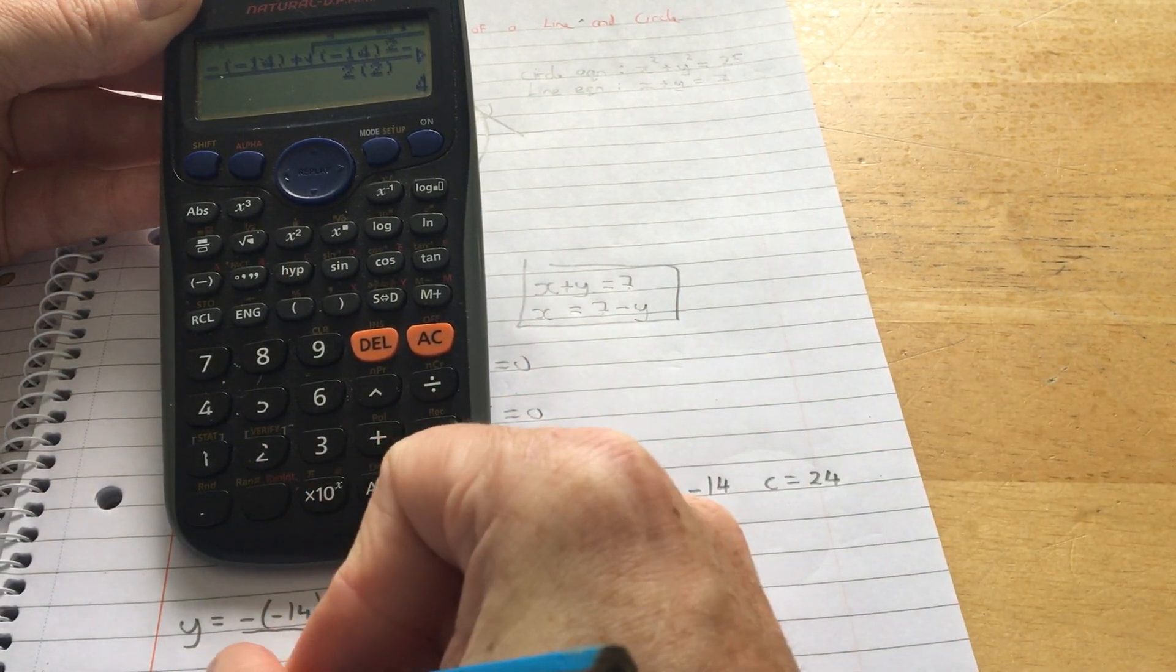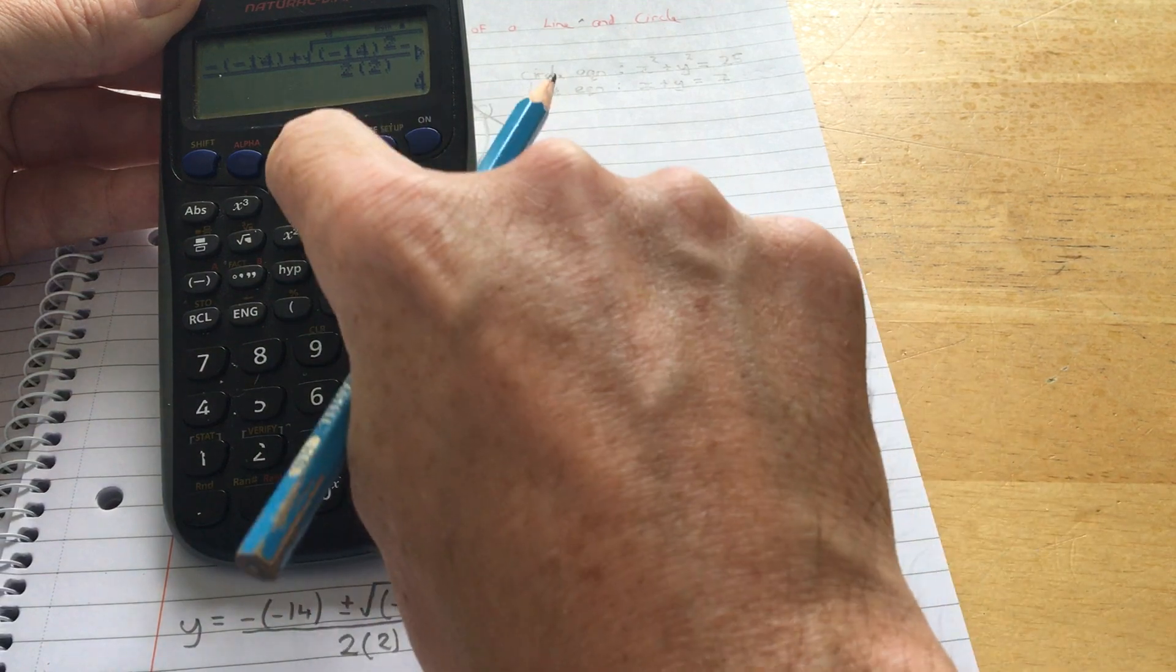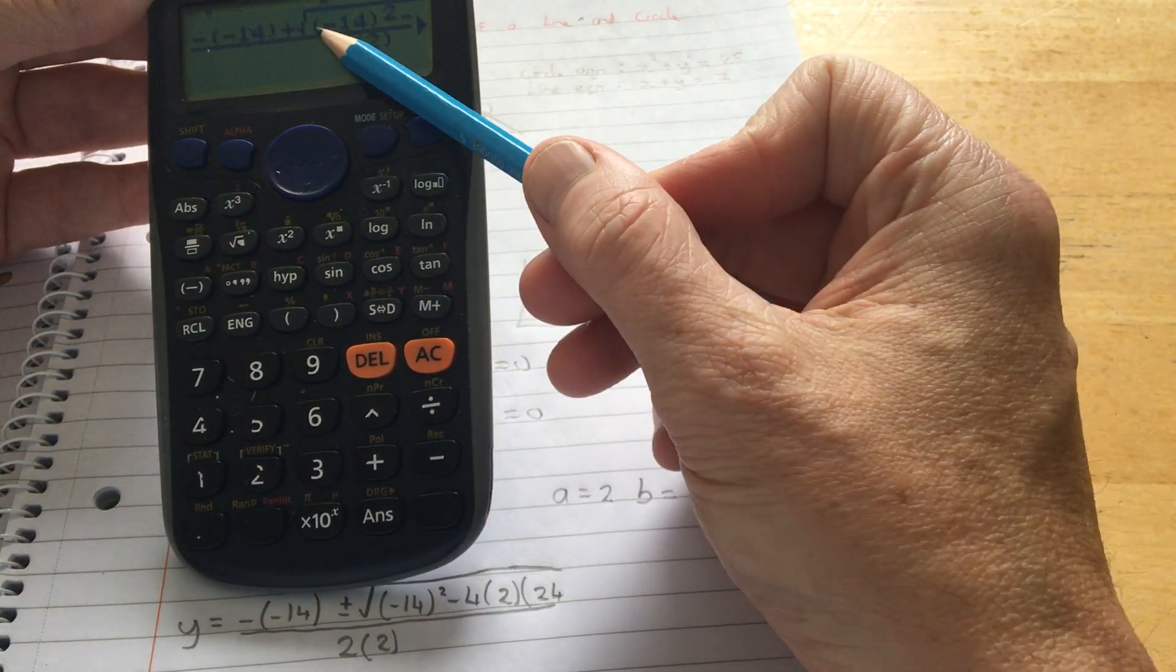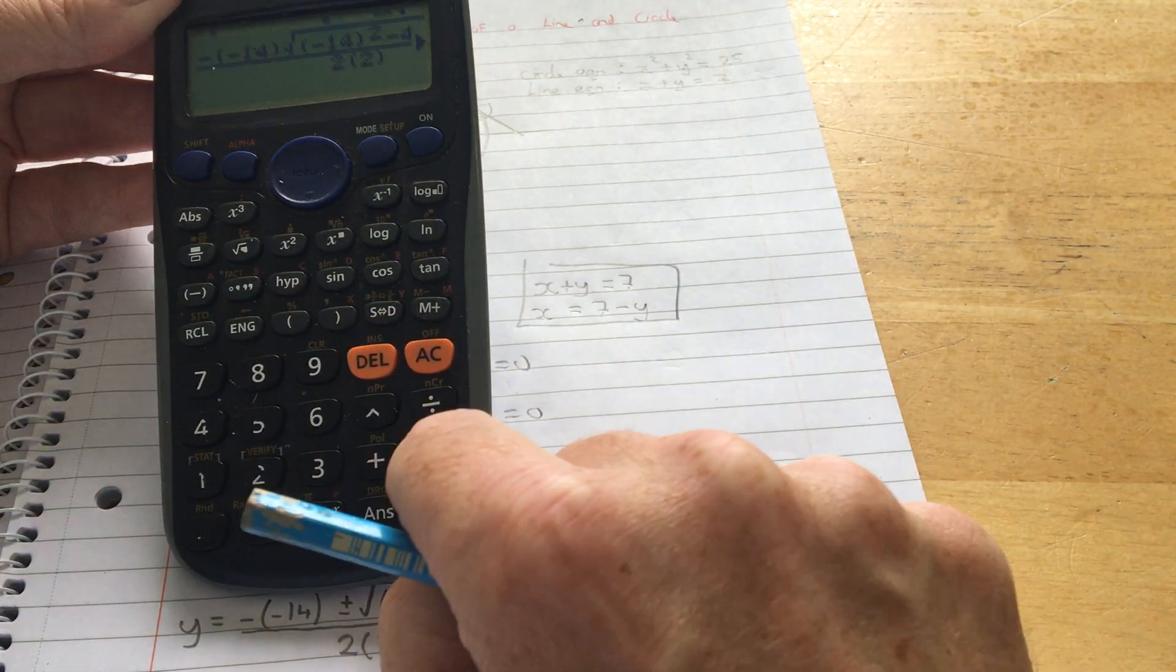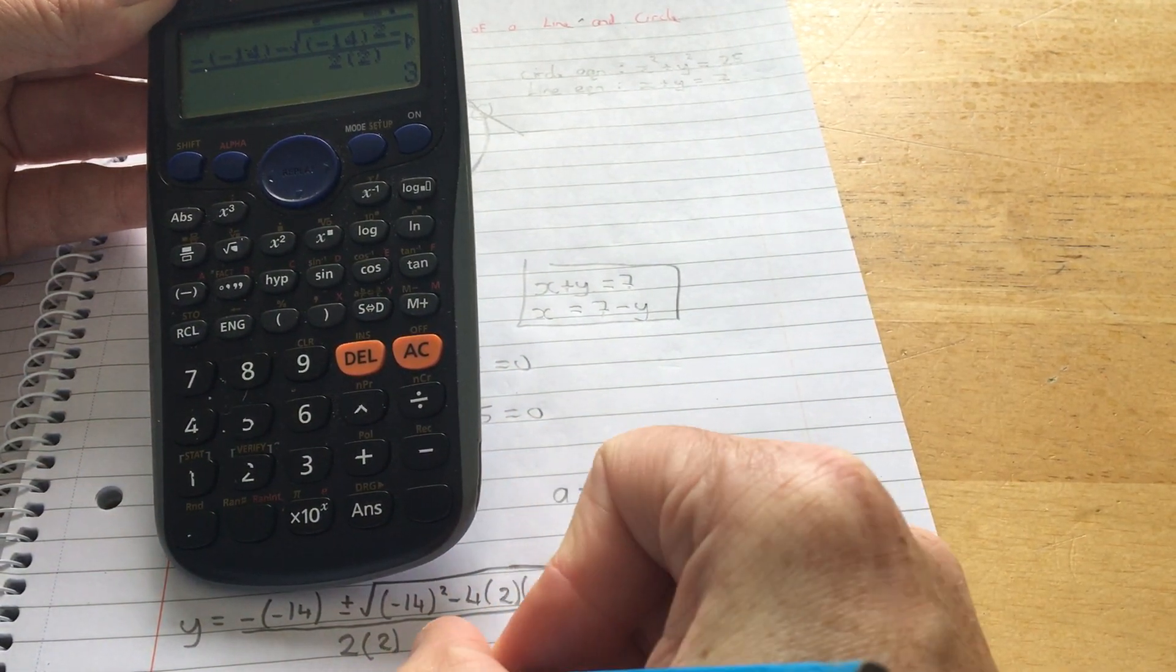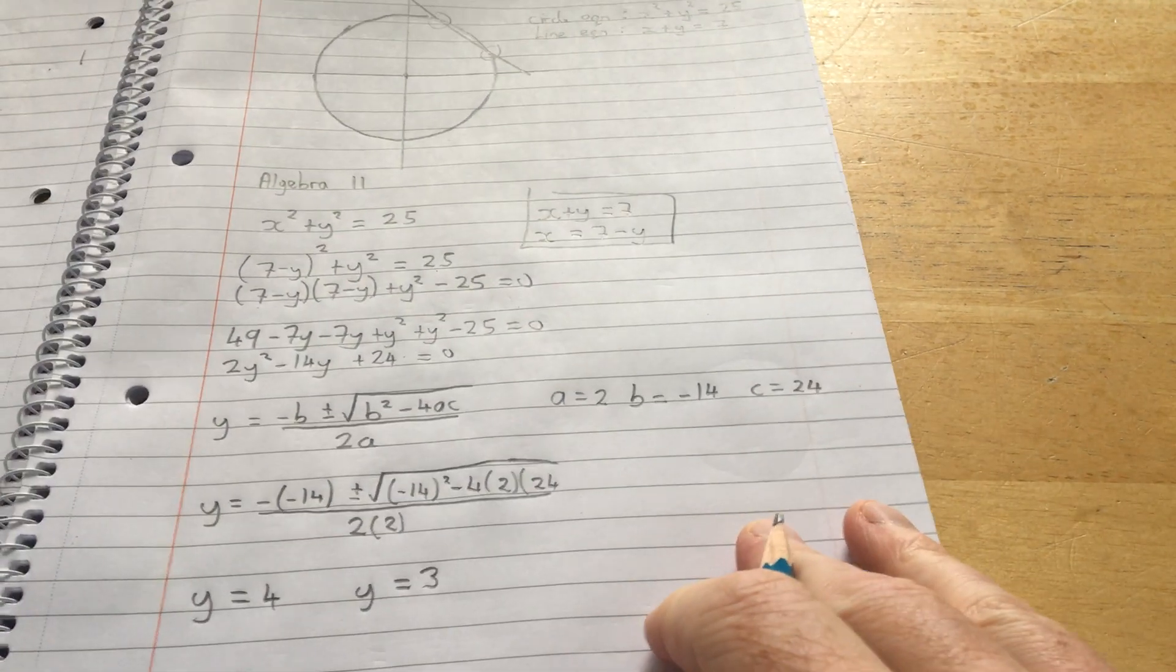The first answer I get is 4. To get the second answer then, just change the plus. See up here, the plus. Delete that and put in the minus. So this is all just revision from earlier in the year. So I get two answers. I get y equals 3 and y equals 4.